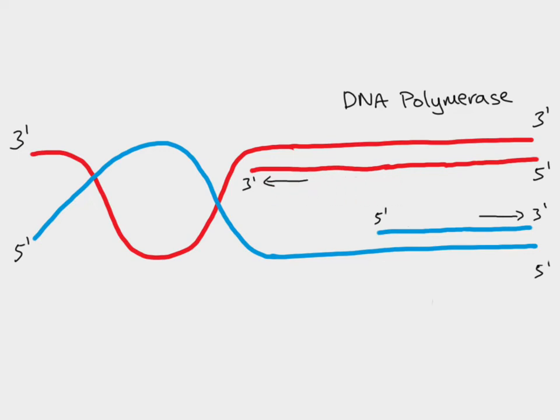But again we have a problem with this strand down here. Because this is the 5' end. We can't add on to this direction because this would be going towards the 5' end. And we have to go towards the 3' end. So we make a section here. So we've made one section. And now we make another section.